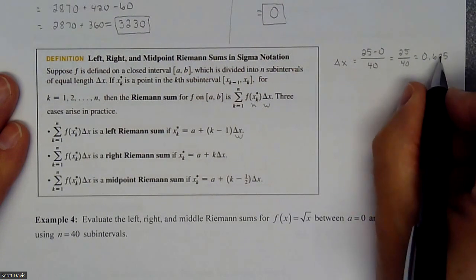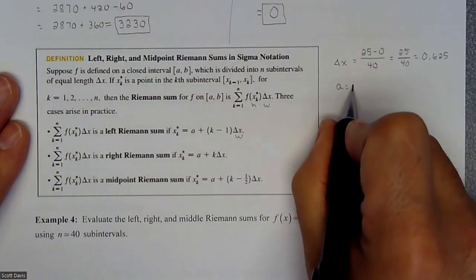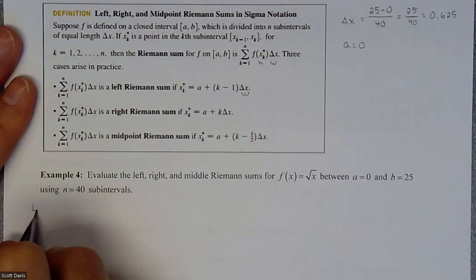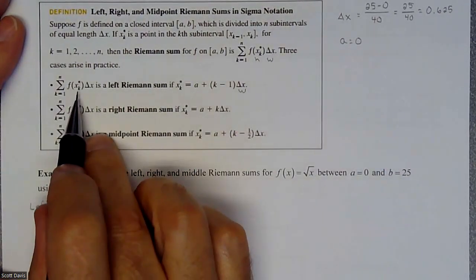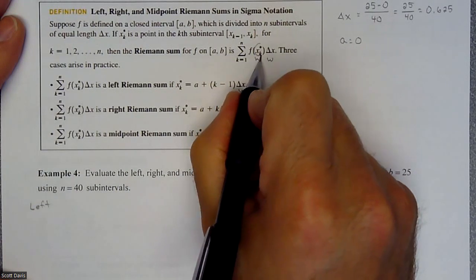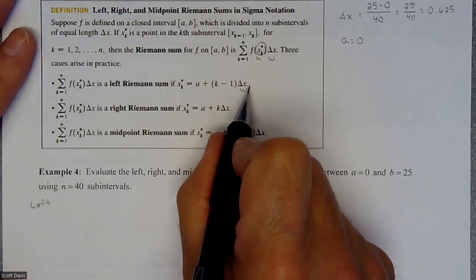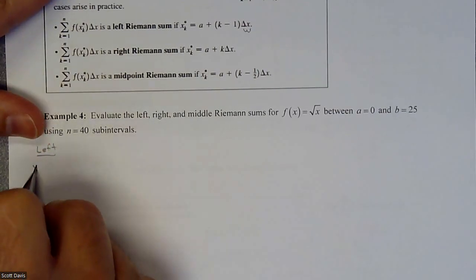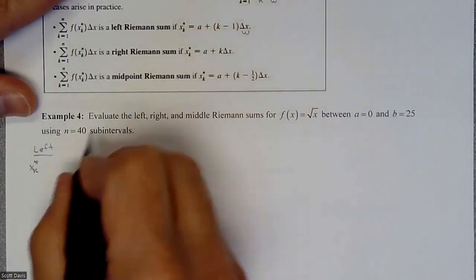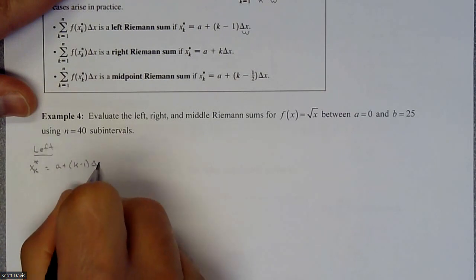We're going to have 40 rectangles with this width, but we don't know all the heights yet. Our a value is zero. When we do a left Riemann sum, we use the formula for x_k*: it's going to be a plus (k minus 1) times delta x. Our a value is zero — that's where we're starting — and k is our variable.